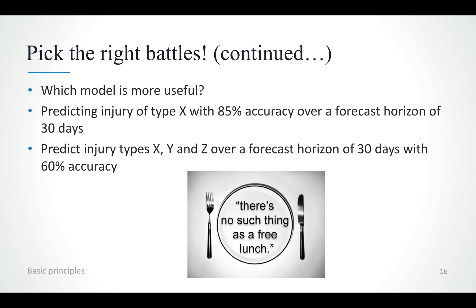Let's say that you have two models. The first model predicts a specific kind of injury with 85% accuracy over a horizon of 30 days, while the second model can predict three different injury types over the same horizon, but with only 60% accuracy. Which model is the best? There's no real answer here — this really depends on your goals. It's important to remember there's no such thing as a free lunch. The first model has a higher accuracy but predicts only one type of injury, while the second model can predict more injuries but with smaller accuracy. In the end, the right choice depends upon the particular problem, the needs of the team, and the goals.